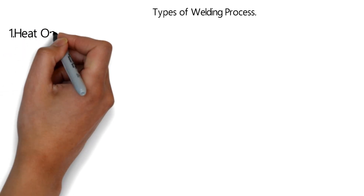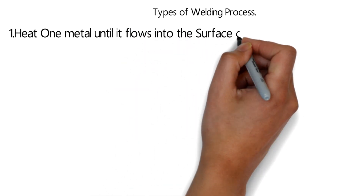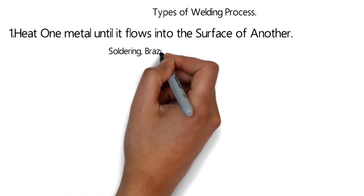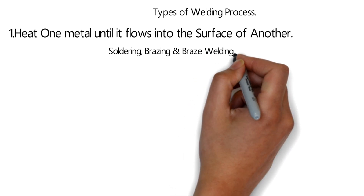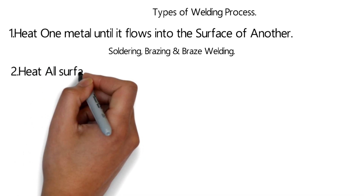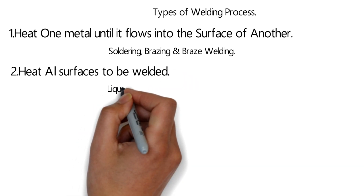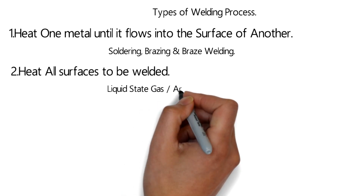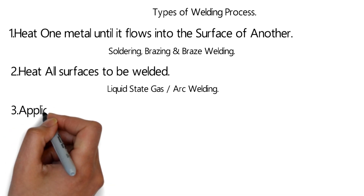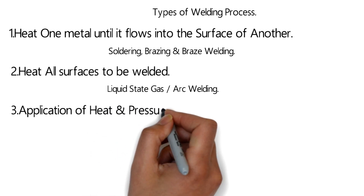There are many types of welding processes depending on certain parameters. The first type involves heating one metal until it flows into the surface of another metal — this is known as soldering, brazing, or braze welding. The second type involves heating all surfaces to be welded to a liquid state, which includes gas welding or arc welding. The third type is the application of heat and pressure.